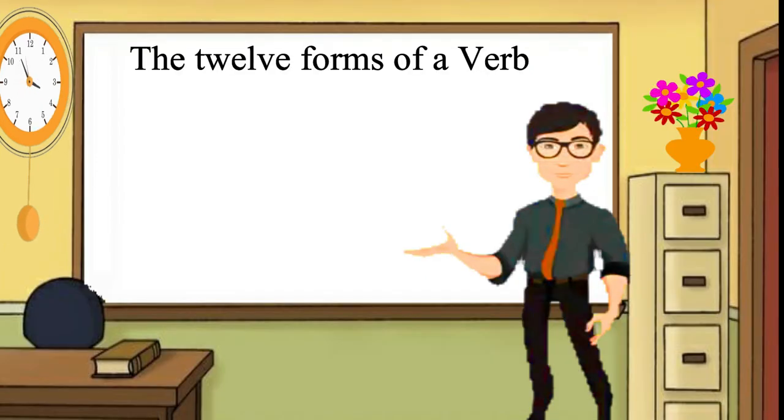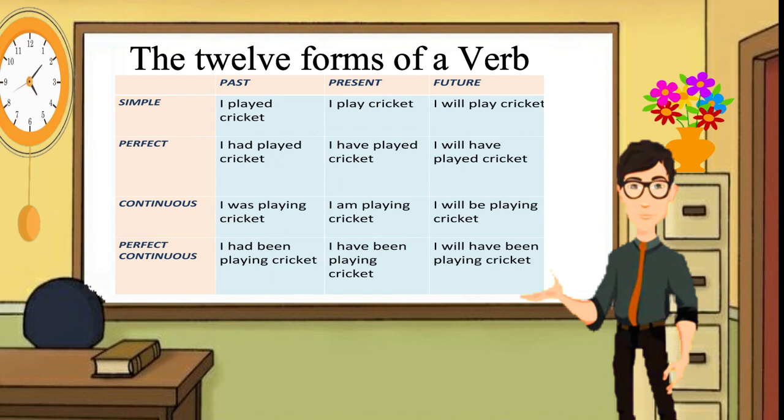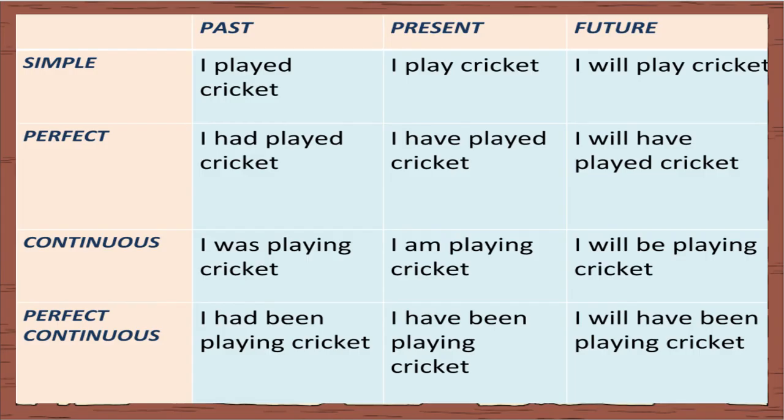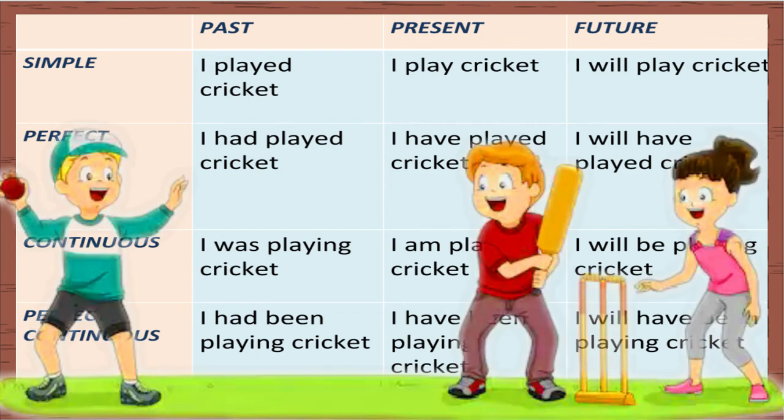The combination of the three tenses and two aspects give us the following 12 forms of verb, which has been presented before you in this matrix. The sentences deal with the action of playing cricket. The act of playing cricket in the past tense can be expressed in the following four ways.